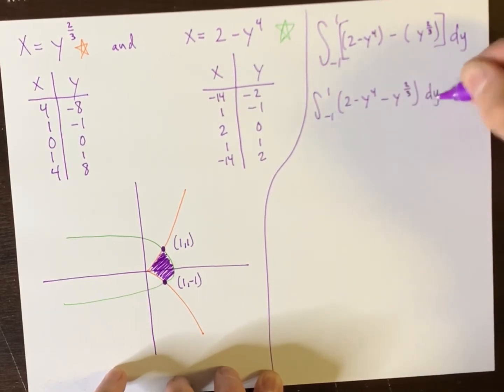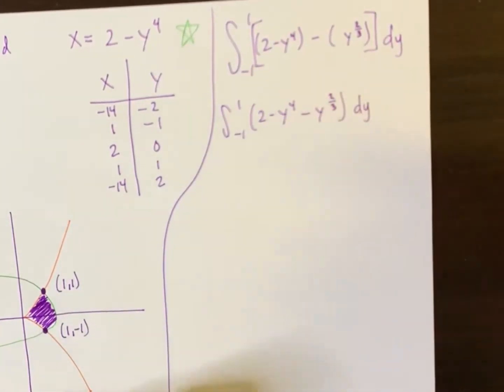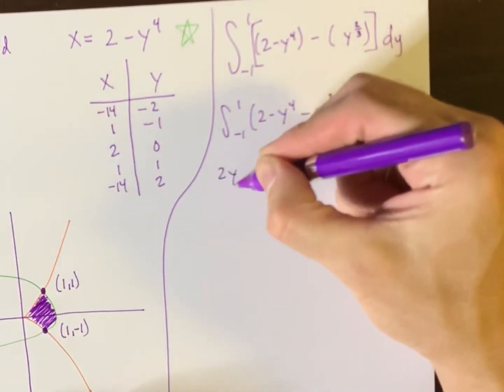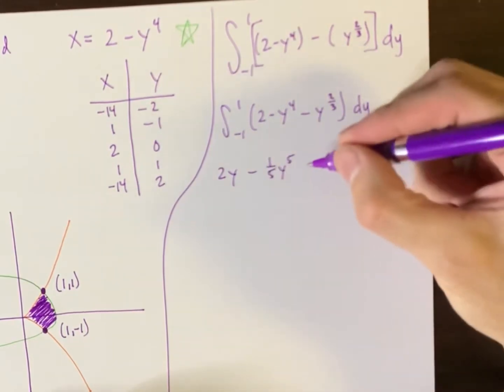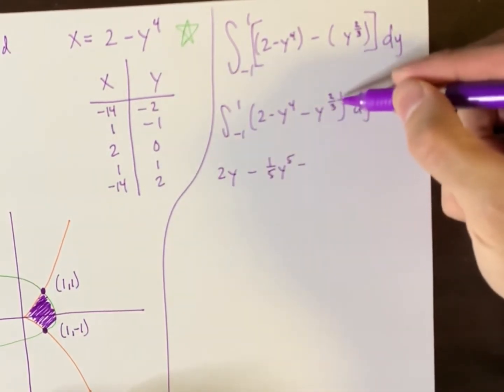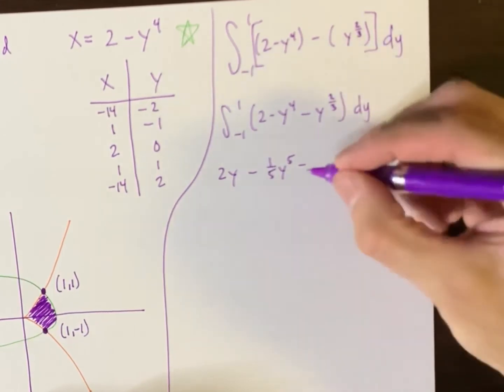Close that dy. And now we can integrate term by term so that we have two y minus a fifth of y to the fifth. And then minus. Let's see. If you add one to this, that's going to be five thirds. So three fifths.